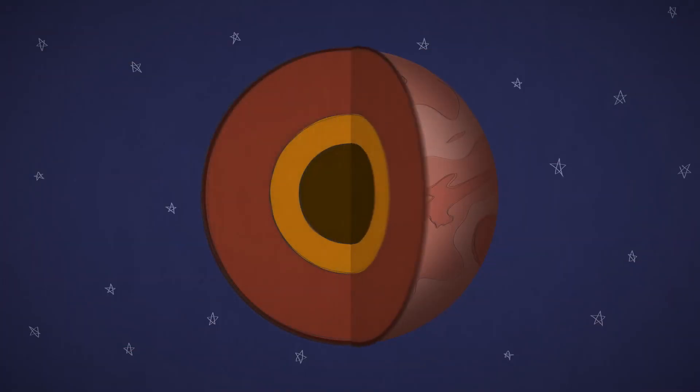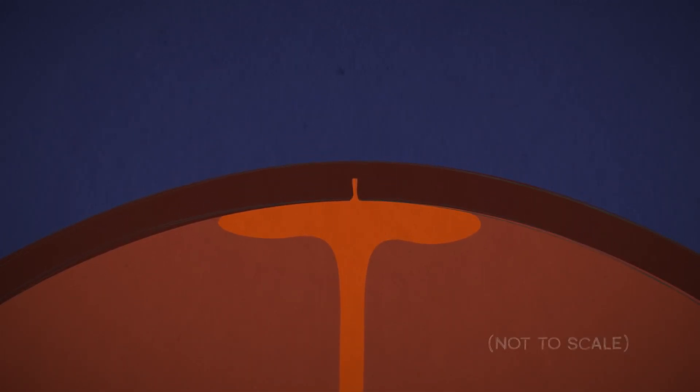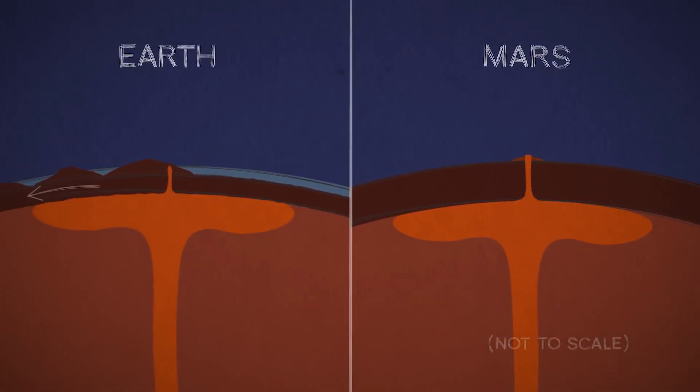Early on, Mars had really active volcanoes, fed by hot, rising blobs of rock from deep inside. But Mars doesn't have tectonic plates that move over hotspots, like in Hawaii. So instead of getting a chain of volcanoes, you could keep building one huge one.